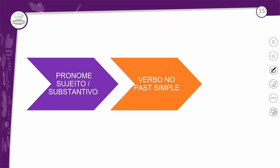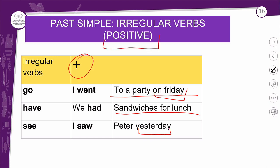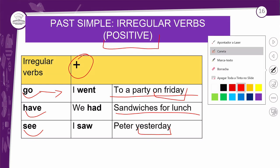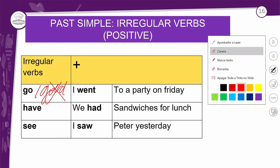Para lembrar como fazer frases com o passado simples, você precisa do pronome pessoal (sujeito), podendo ser nome próprio ou substantivo como 'the table', 'the book', 'the backpack' — e o verbo no passado simples. Além do verbo, você tem complemento e expressão de tempo. Irregular verbs, positive forms: o verbo 'go' no passado — 'I went to a party on Friday', não 'I goed'. O verbo é irregular, então não recebe -ED.